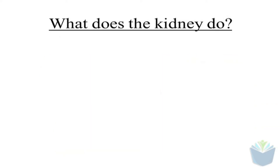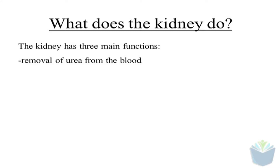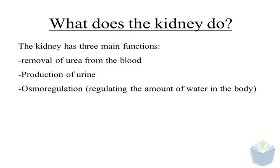Your kidneys do three very important jobs. The first job is the removal of urea from the blood, the second is the production of urine, and the third is osmoregulation.